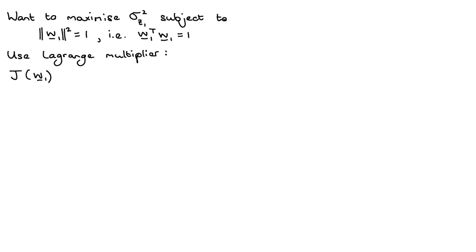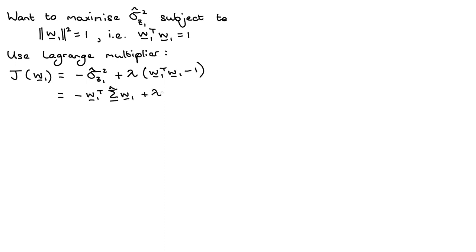Using a Lagrange multiplier, we write the loss J as a function of W1. We want to maximize the variance, which is the same as minimizing the negative of it. We introduce scalar lambda and add lambda times W1 transpose W1 minus 1 as our constraint. If we minimize this with respect to W1 and with respect to lambda, we will meet the constraint. Substituting in what we found gives us negative W1 transpose sigma W1 plus lambda times W1 transpose W1 minus 1.